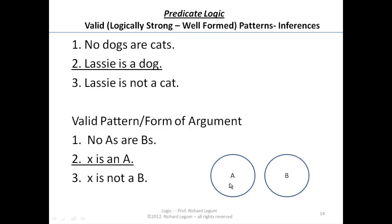Well, if x is there, then there's no way in the world that x can be within that B pattern. So it's a valid pattern, a valid form of argument.